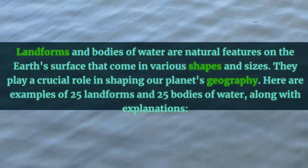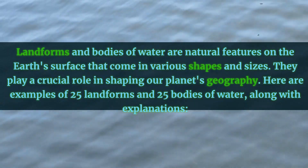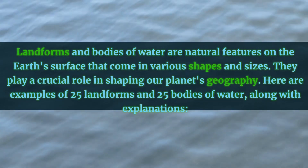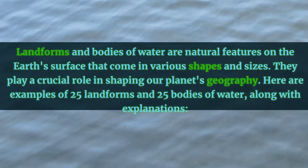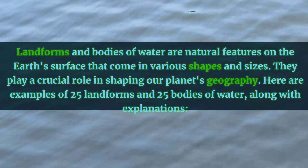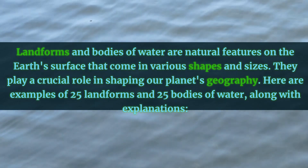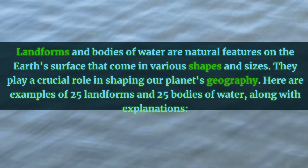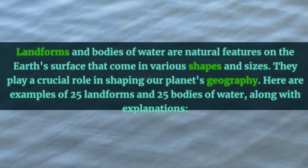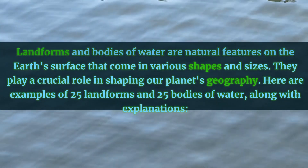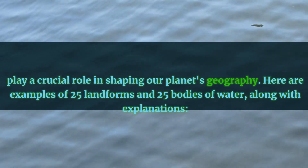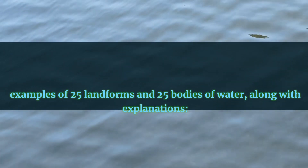Landforms and bodies of water are natural features on the Earth's surface that come in various shapes and sizes. They play a crucial role in shaping our planet's geography. Here are examples of 25 landforms and 25 bodies of water, along with explanations.